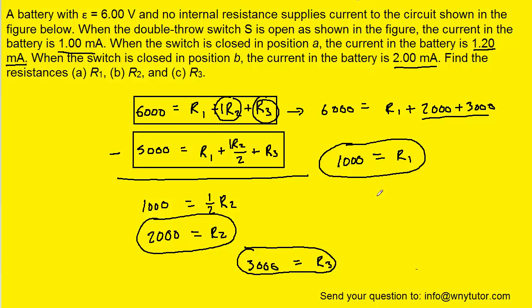If for some reason your homework system wants them in kiloohms, then you would have to divide each one by 1,000. So for example, R1 would just become 1 kiloohm, R2 would become 2 kiloohms, and R3 would become 3 kiloohms.